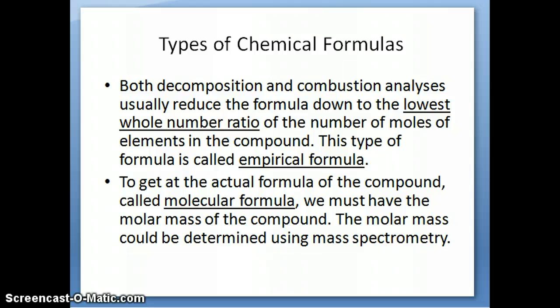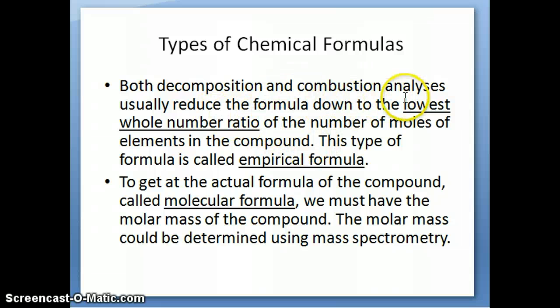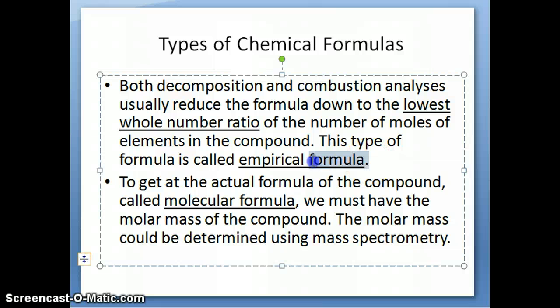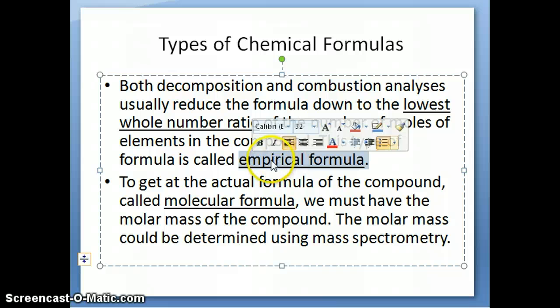Let's talk about the type of chemical formulas you get from doing those two analyses — combustion and decomposition. Both experimental methods give you formulas reduced down to the lowest whole number ratio of the number of moles of elements in the compound. When you reduce it to the lowest whole number ratio, we call this the empirical formula — the formula you determine empirically, meaning experimentally, using either decomposition or combustion.